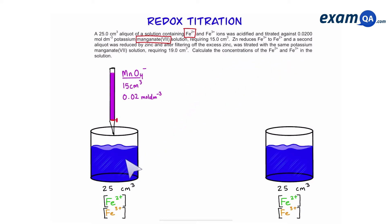In the first beaker, we react manganate. We use 15 centimeters cubed of 0.02 moles per decimeter cubed. Remember, manganate is an oxidizing agent, and in the beaker we have iron 2 plus and 3 plus. It will only react with the 2 plus because that is the reducing agent.